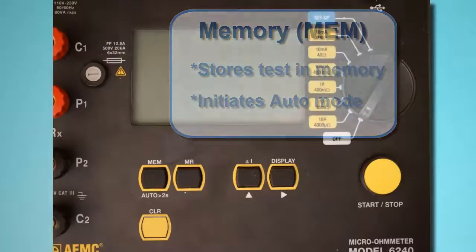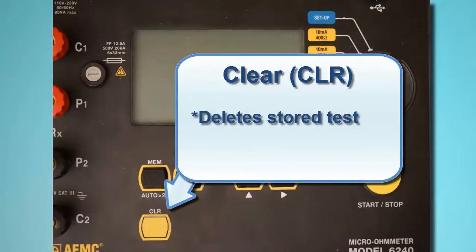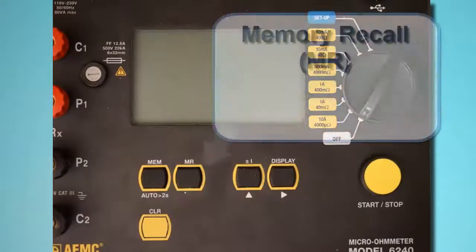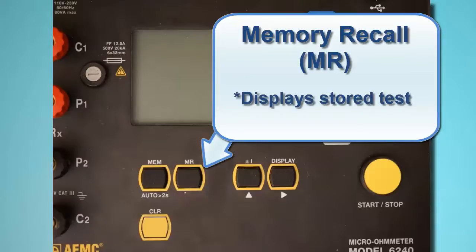Below the Memory button is the Clear button, labeled CLR. This removes the selected test from the instrument's memory. To the right of the Memory button is the Memory Recall button, labeled MR. This displays records stored in memory.